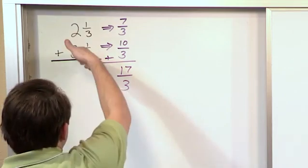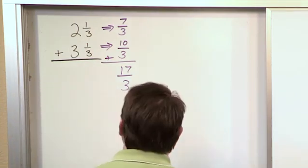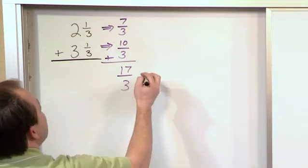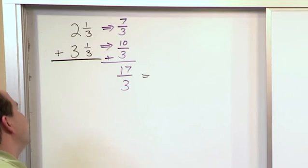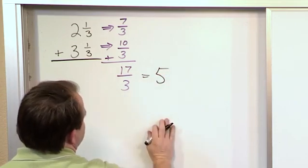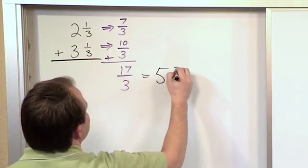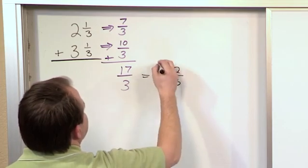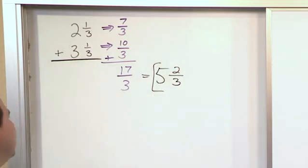So typically when you're adding mixed numbers, you want to get the answer back in mixed numbers, so you want to convert this back. How many times will three go into seventeen? Well, three times six is eighteen, that's too much. Three times five is fifteen, right? The difference between fifteen and seventeen is two, and it'll be over three. So we get 5⅔, that's the answer.